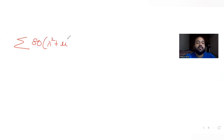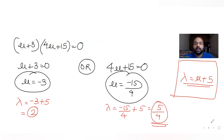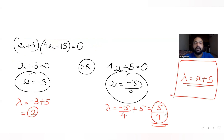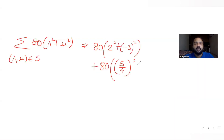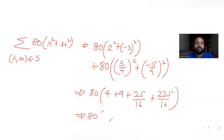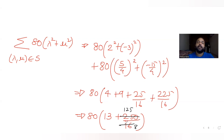Now we compute the sum of 80 times (lambda squared + mu squared) for all values in set S. For the first pair (lambda=2, mu=-3): 80 times (4 + 9) = 80 times 13 = 1040. For the second pair (lambda=5/4, mu=-15/4): 80 times (25/16 + 225/16) = 80 times (250/16) = 80 times 125/8 = 1250.